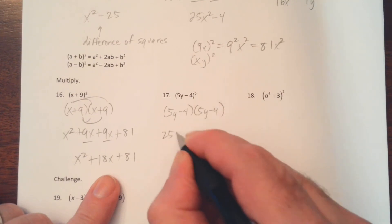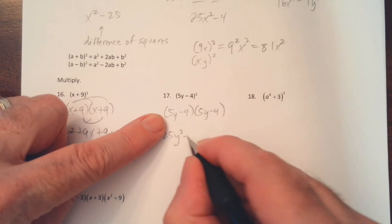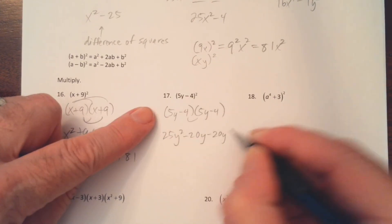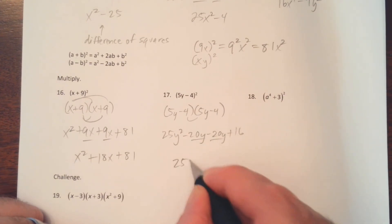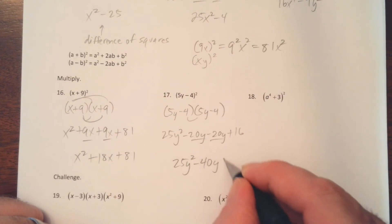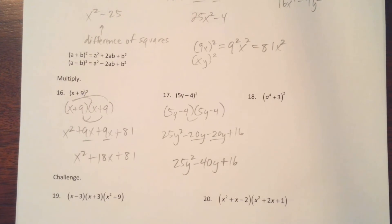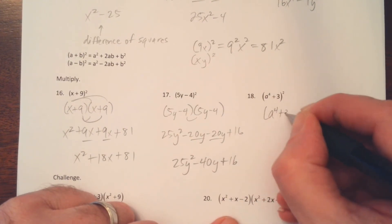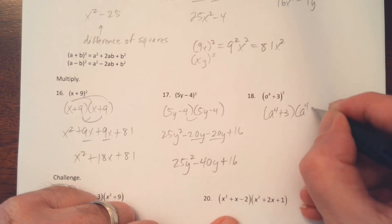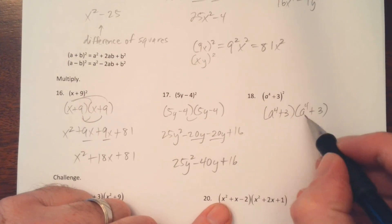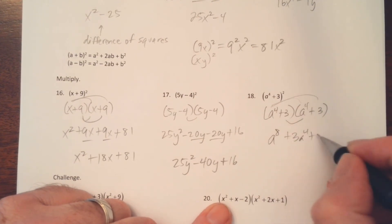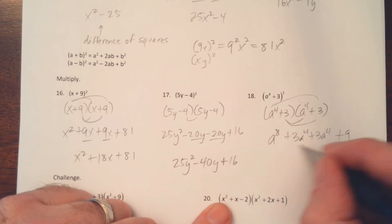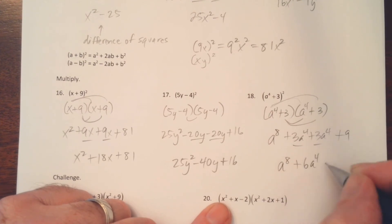There is a pattern: x squared comes from squaring x, 81 from squaring 9, and 18x from multiplying 9 times x and doubling it. For the next example: the first terms give 25y squared, the outer terms give minus 20y, same for the inner terms, and negative 4 times negative 4 is plus 16, so we end up with 25y squared minus 40y plus 16. On number 18, (a to the 4th plus 3) squared: we get a to the 8th, plus 3a to the 4th twice, plus 9, giving a to the 8th plus 6a to the 4th plus 9.